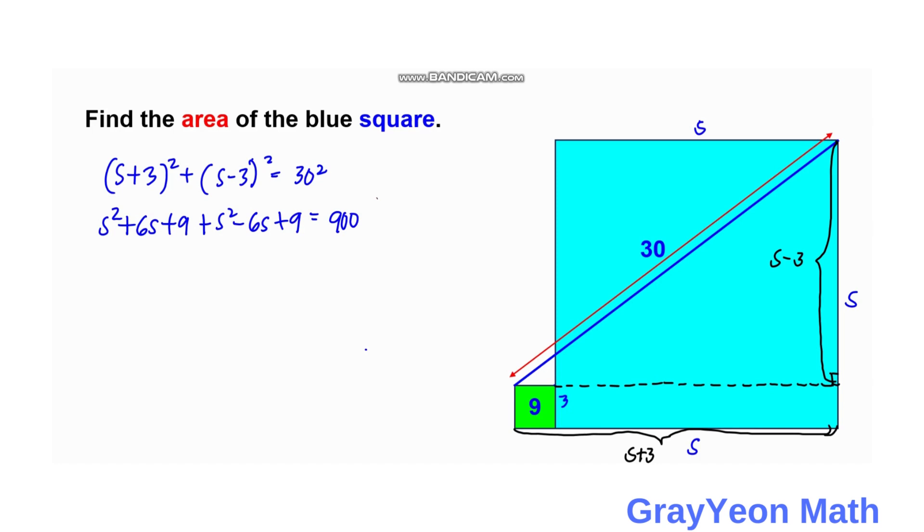We have 2S² and we cancel the 6S and negative 6S terms. Then plus 18 equals 900. So 2S² + 18 = 900, which means 2S² = 882. If we divide both sides by 2, we have S² = 441.